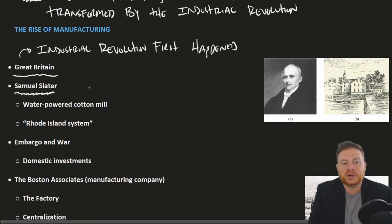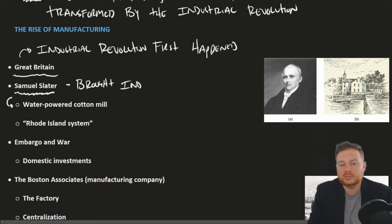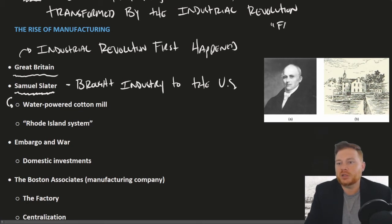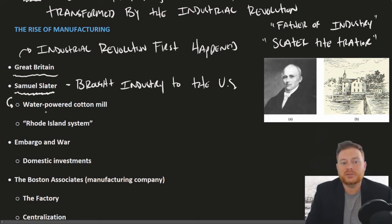However, Samuel Slater memorized the plans in Britain, came to the United States, and began constructing the very first factories — in this case, the first water-powered cotton mill in the United States. From an American perspective, we call him the father of industry. The British have a harsher view — they call him Slater the Traitor, because he was treasonous in giving the United States this huge technological advantage.